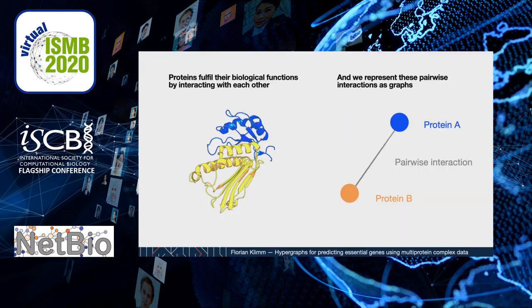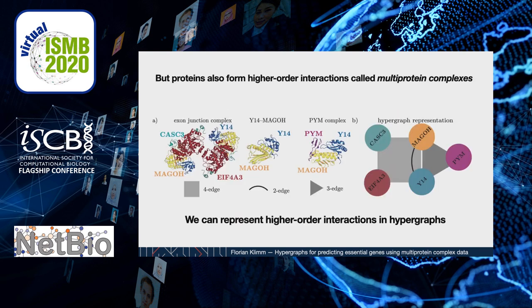Proteins are active biomolecules in the human body that fulfill many different biological functions. Importantly, they fulfill their functions not on their own but by interacting with one another. We can measure those interactions between proteins and represent pairwise interactions as graphs, in which nodes are proteins and we connect those nodes pairwise if there is an interaction between the associated proteins. It is known, however, that proteins not only interact pairwise but also in higher orders. One example for this are multi-protein complexes.